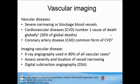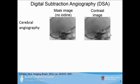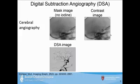When it comes to imaging vascular diseases, X-ray angiography is used in the vast majority of cases to assess the severity and location of vessel narrowing. One of the most common forms is digital subtraction angiography, or DSA. In DSA, a mask image is first acquired showing only anatomy — the skull, maxilla, and mandible. Then a radio-opaque dye, typically iodine, is injected and another image is acquired. The mask and contrast images are subtracted to reveal the vasculature.